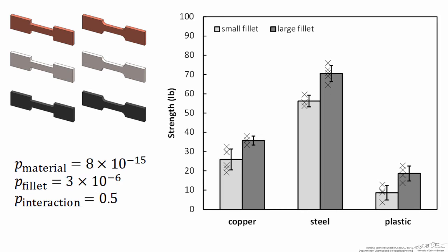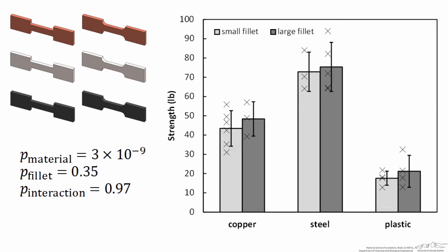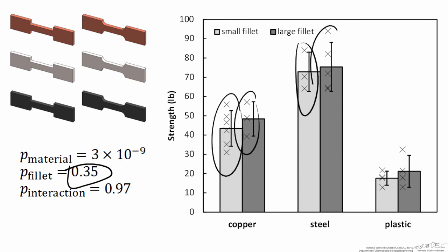Here's a second simulated data set in which I've tightened up the standard deviations for all of my samples. This shows that the difference between the large fillet and the small fillet is more significant — we see very little overlap between all of the data sets. Consequently, that decreases our p-value for fillet from 0.025 down to 3 times 10 to the negative 6, indicating a much more significant difference for the fillet.